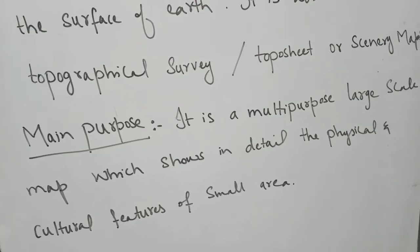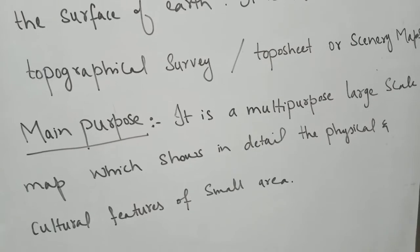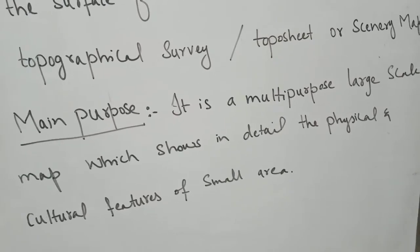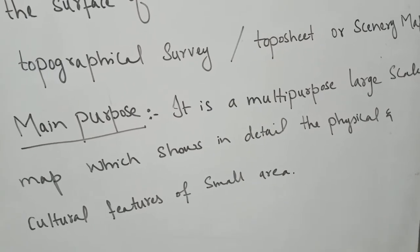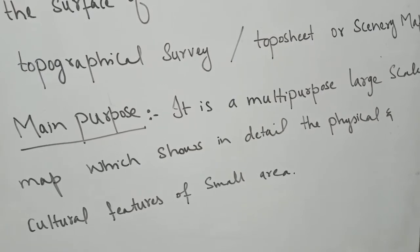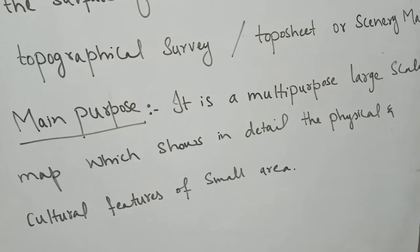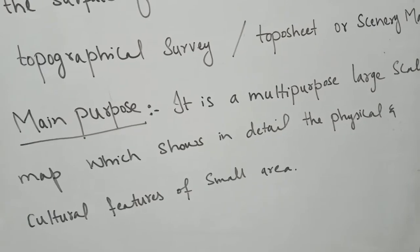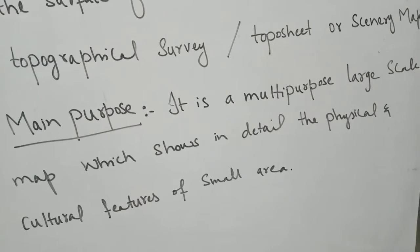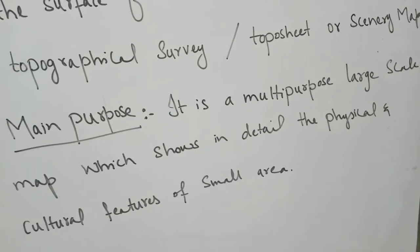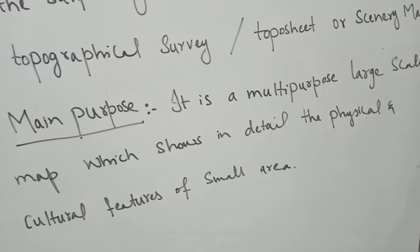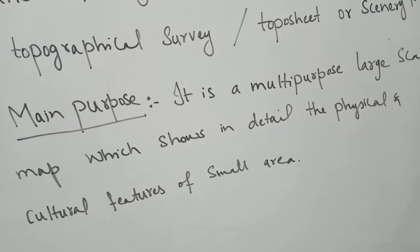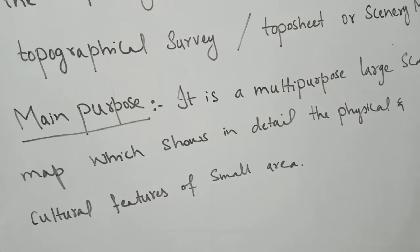Now we need to look at the main objective for drawing these topographical maps. These maps are drawn on a large scale, which is responsible for covering a small area but showing every part in detail. The main purpose is to capture a small scenic area, any recreational point, or any topographical physical feature — with everything discussed in detail. The features can be any physical feature or cultural feature.